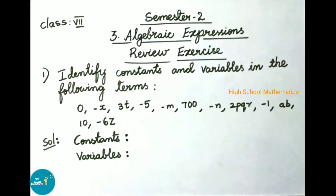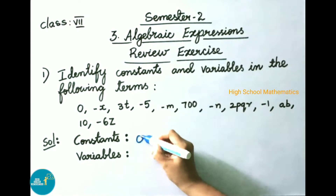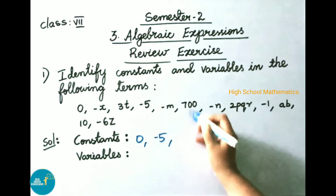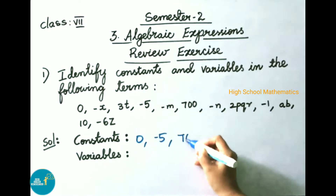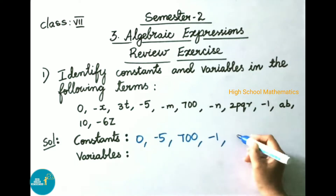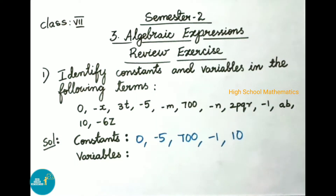The definition of a constant: a constant has a fixed value. Examples: 0, minus 5, 700, minus 1/10. The definition of a variable: a variable can take various values and its value cannot be fixed.